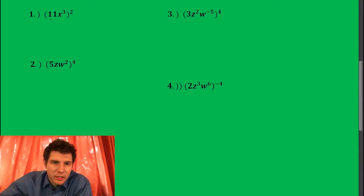So for this first problem 11x³ squared, when there's a 2 here this goes to both of these terms. So 11 squared is 121 and then x cubed squared you multiply the exponents is x to the sixth. That's it for that one.